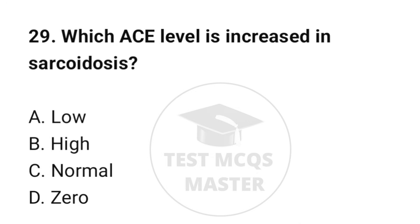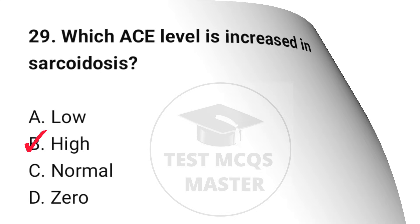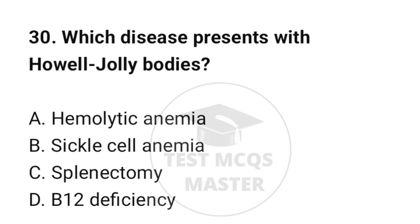Question number 29: Which ACE level is increased in sarcoidosis? The correct option is B: High. Question number 30: Which disease presents with Howell-Jolly bodies? The correct option is C: Splenectomy.